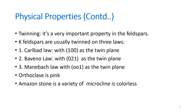Twinning is a very important property in feldspars. Potash feldspars are usually twinned on three laws: the Carlsbad law, the Baveno law, and the Manebach law. In the Carlsbad law, (100) is the twin plane; in the Baveno law, (021) is the twin plane; and in the Manebach law, (001) is the twin plane. Orthoclase is generally pink in color, and amazonite is a variety of microcline.